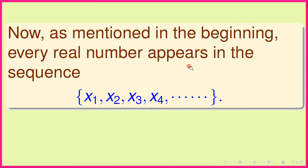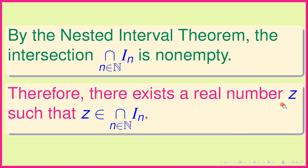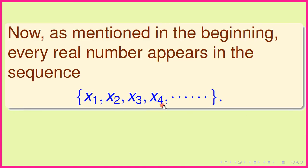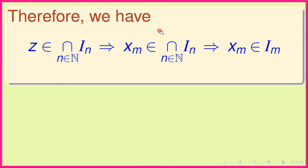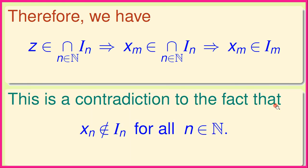Now, as assumed at the beginning, every real number appears in the sequence x_1, x_2, x_3, x_4, ... since R is countable. So in particular, z equals x_m for some m in the natural numbers. Therefore z belongs to the intersection of all I_n, which implies x_m belongs to the intersection, and in particular x_m belongs to I_m. But this is a contradiction to the fact that x_n does not belong to I_n for all n — this is precisely how I_n was constructed.